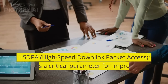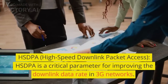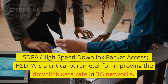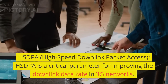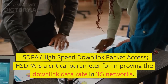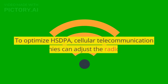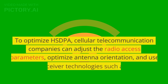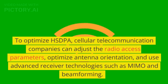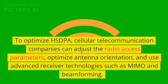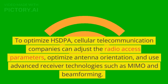HSDPA, High-Speed Downlink Packet Access: HSDPA is a critical parameter for improving the downlink data rate in 3G networks. To optimize HSDPA, cellular telecommunication companies can adjust the radio access parameters, optimize antenna orientation, and use advanced receiver technologies such as MIMO and beamforming.